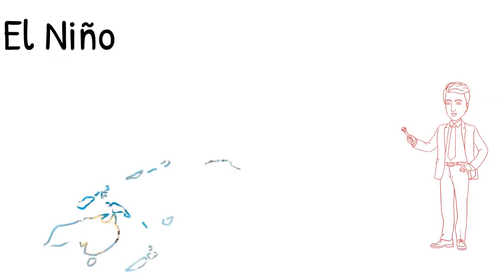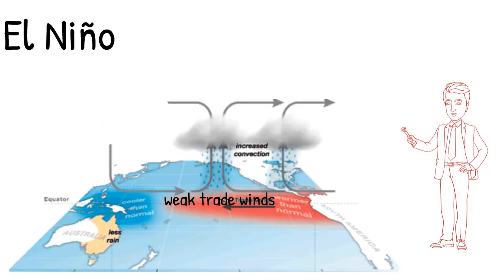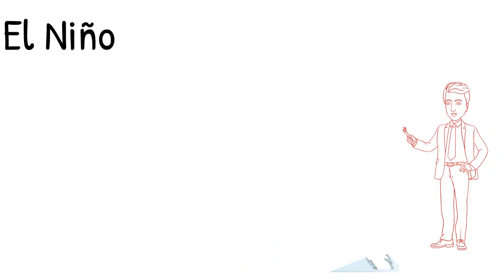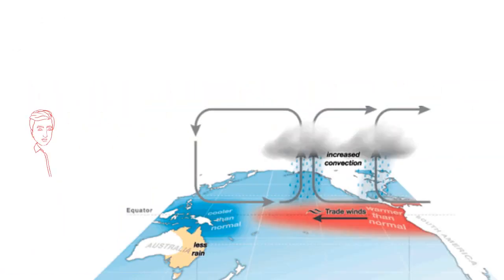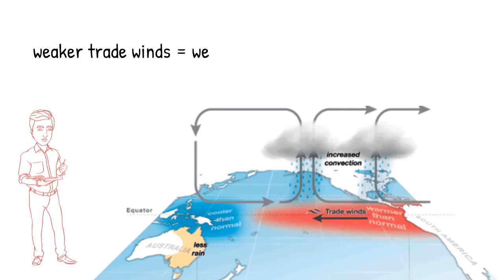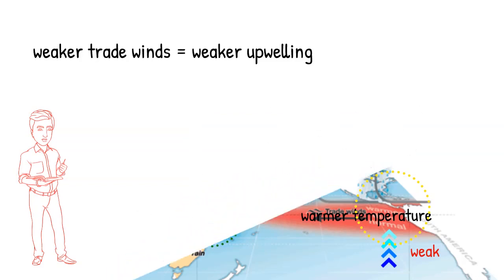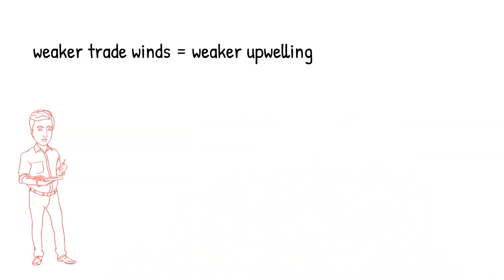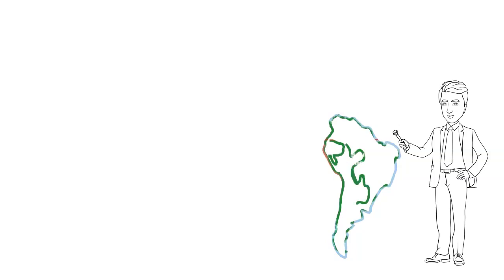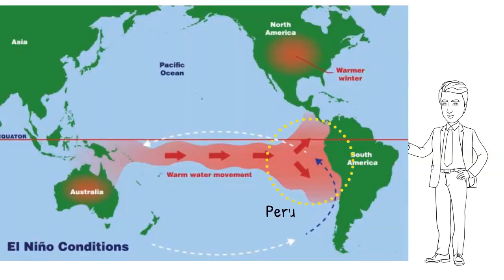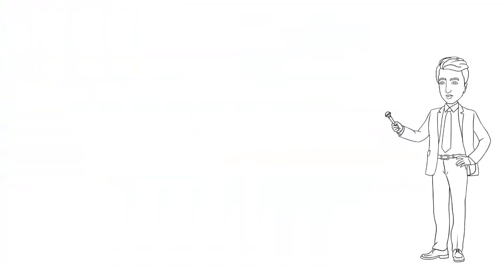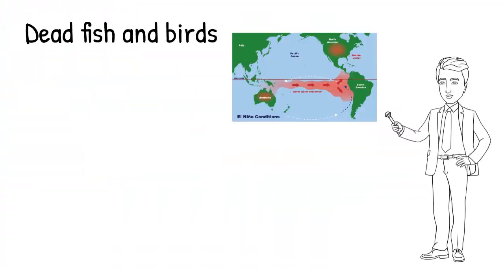During an El Niño event, trade winds weaken or may even reverse, caused by slow changes in the ocean. This means less warm water is being pushed to the western Pacific, resulting in less upwelling on the eastern side. Lesser upwelling of nutrients on the eastern Pacific, such as in countries like Peru and Ecuador, results in the death of fish and birds that feed on those nutrients.